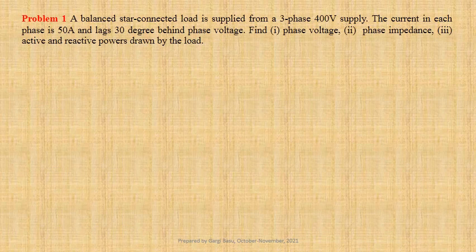A balanced star connected load is supplied from a three-phase 400 volt supply. The current in each phase is 50 ampere and lags 30 degrees behind the phase voltage. We have to calculate phase voltage, phase impedance, and active and reactive powers drawn by the load.